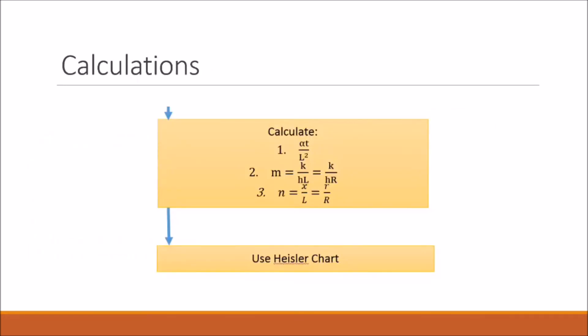Before we can use the Heisler chart, we usually calculate these three variables here. However, we can't find this alpha T over R squared in our case, so we don't have to worry about that. But we can find M and N, and we can do that for each situation given in the problem. Then we can finally use our Heisler chart to solve the problem.